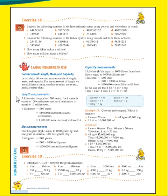A kilometer is equal to thousand meters. Each meter is equal to hundred centimeters. And each centimeter is equal to 10 millimeters. So one kilometer equals thousand meters, equals one hundred thousand centimeters.